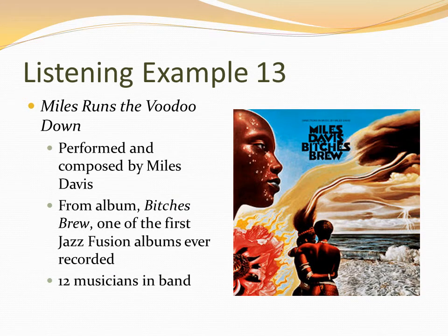The last listening example is called 'Miles Runs the Voodoo Down,' composed and performed by Miles Davis. It's from his album 'Bitches Brew,' which was one of the first jazz fusion albums ever recorded. He had 12 musicians performing along with his band, and you're going to hear elements of both rock and roll and jazz in this piece. When we talk about rock and roll later, we'll revisit this piece briefly to see if you can then hear the rock and roll influences a little better.